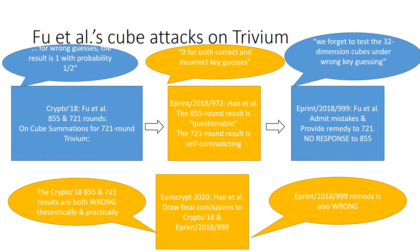Soon afterwards, Hao et al. gives a thorough analysis to Fu's result in ePrint. They provide theoretic evidence that the 855 round result is questionable and the practical one is completely self-contradicting. They find that the cube submissions in the practical attack are constantly zero for both correct and incorrect key guesses.